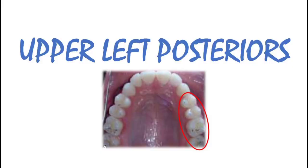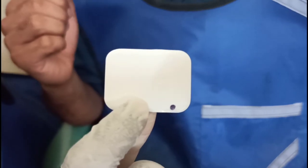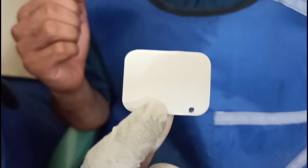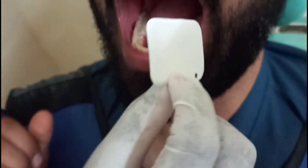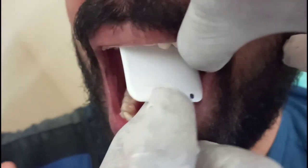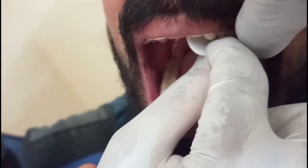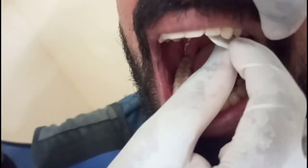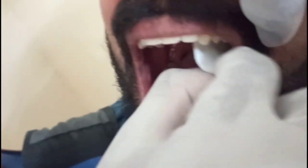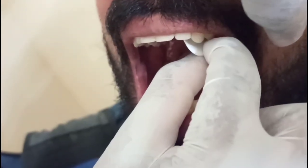Moving on to upper left posteriors: now we have to use our index finger for measuring and hit the index fingernail to the occlusal plane, ensuring the parallelism of the edge of the x-ray film to the occlusal plane.